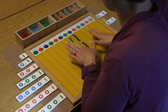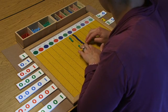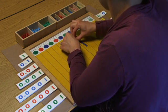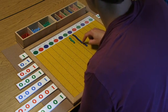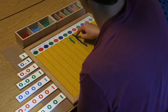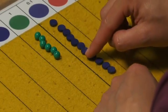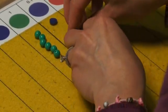And then to add we're going to push everything up. And then I start counting my tenths, 1, 2, 3, 4, 5, 6, 7, 8, 9, 10. I can exchange 10 tenths for 1 unit.